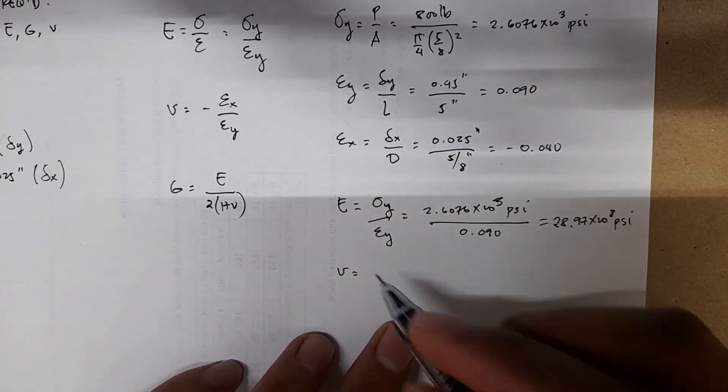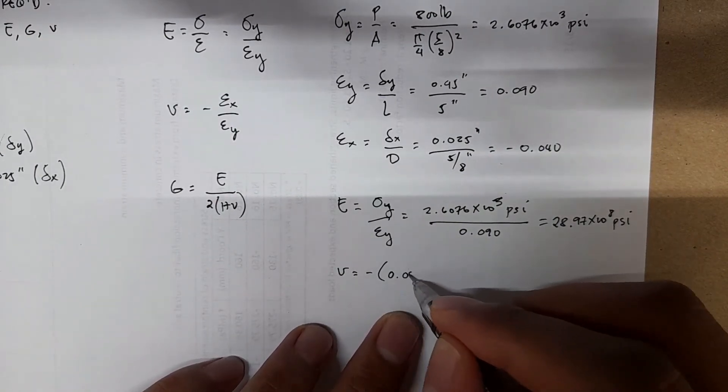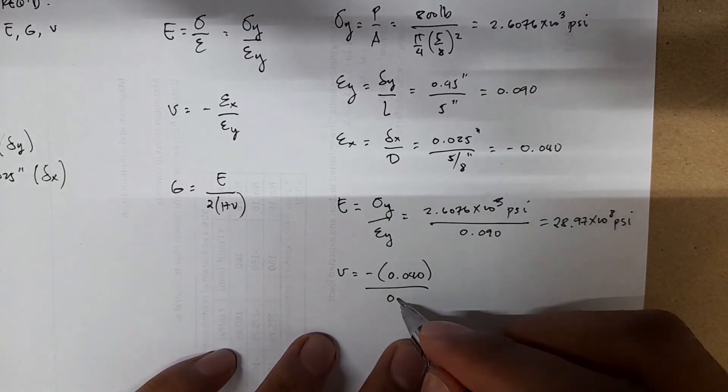So you have negative of strain x, which is negative 0.040, divided by strain y, which is 0.090. This equals 0.444.